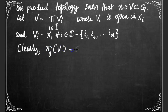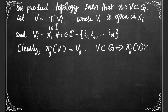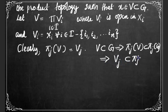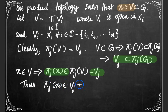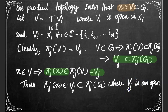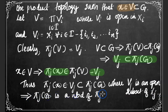Since every element of the standard base is a large open box, πⱼ(V) = Vⱼ. Since V ⊆ G, it follows that πⱼ(V) ⊆ πⱼ(G), which implies Vⱼ ⊆ πⱼ(G). Also, x ∈ V implies πⱼ(x) ∈ πⱼ(V) = Vⱼ. Thus πⱼ(x) ∈ Vⱼ and Vⱼ ⊆ πⱼ(G), where Vⱼ is an open subset of Xⱼ. This implies πⱼ(G) is a neighborhood of πⱼ(x).